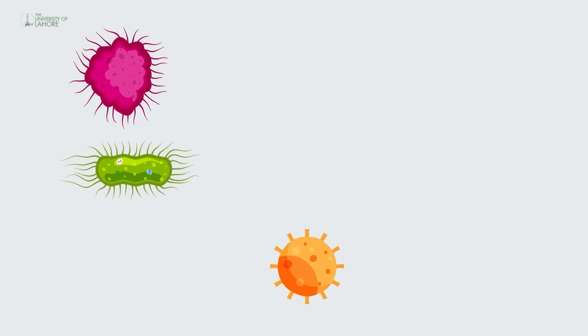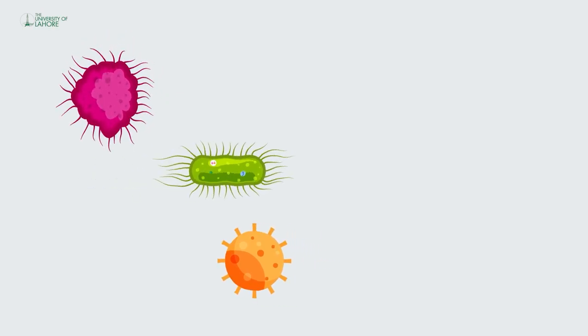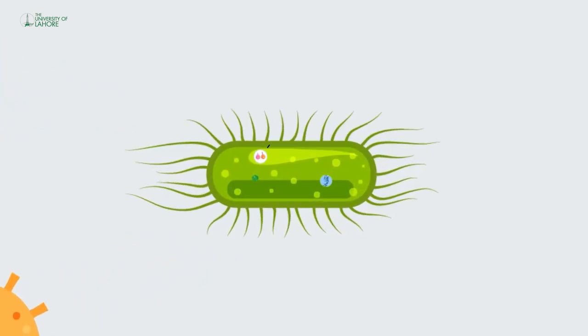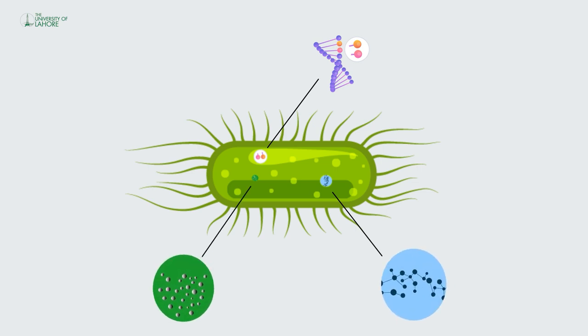Antibiotics slow the growth of bacteria by interfering with the processes the bacteria need to multiply. These processes are DNA replication, metabolism, and protein production.